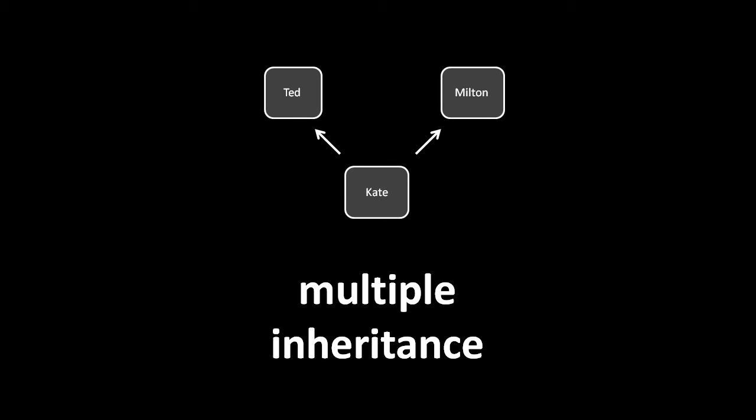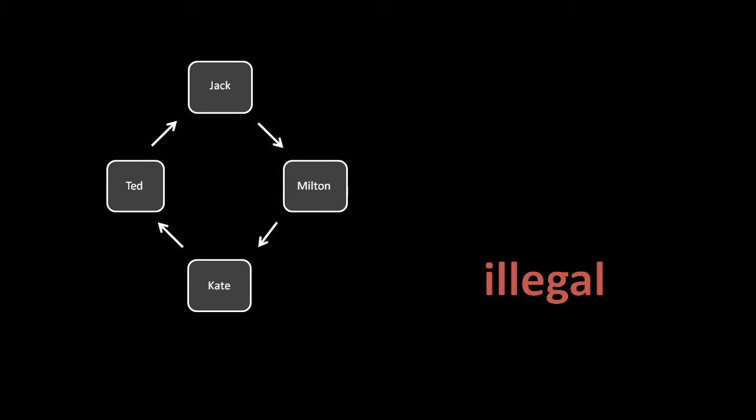On the other hand, multiple inheritance may sometimes be useful, allowing us to take multiple existing classes and mix them together, combining features of multiple classes into one. What's definitely not allowed in any language is circular inheritance, where a class ends up indirectly inheriting from itself — like if Kate inherits from Ted, Ted from Jack, Jack from Milton, and then Milton inherits back from Kate. No languages allow this because it simply doesn't make any sense.